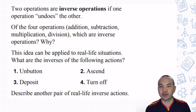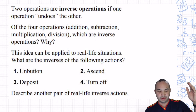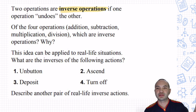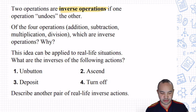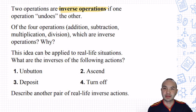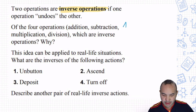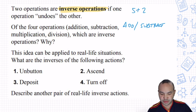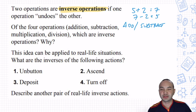A little more vocabulary: inverse operations. If two operations are inverse, one operation undoes the other. The four operations are addition, subtraction, multiplication, and division. Addition and subtraction undo each other. If I say 5 plus 2, I get 7. Then if I undo that by doing 7 minus 2, I get back to 5. Same with multiplication and division — 2 times 3 equals 6, and 6 divided by 3 gives me back 2.